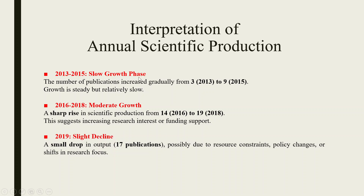Interpretation: From 2013 to 2015 — slow growth phase, publications increased gradually from 3 to 9. From 2016 to 2018 — moderate growth, a surge in scientific production from 14 to 19, suggesting increasing research interest or funding support. In 2019 — slight decline, a small drop to 17 publications, possibly due to resource constraints, policy changes, or shifts in research focus.